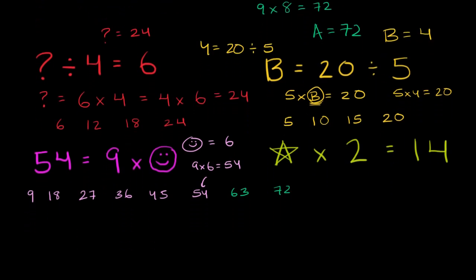Now we have one last one. We have star times 2 is equal to 14. So what times 2 is equal to 14? Well, let's just look at our multiples of 2. So let's see if 2 times 1 is 2, 4, 6, 8, 10, 12, 14. So how many times would we have to multiply 2 to get to 14? So this is 1, 2, 3, 4, 5, 6, 7. 2 times 7 is 14.